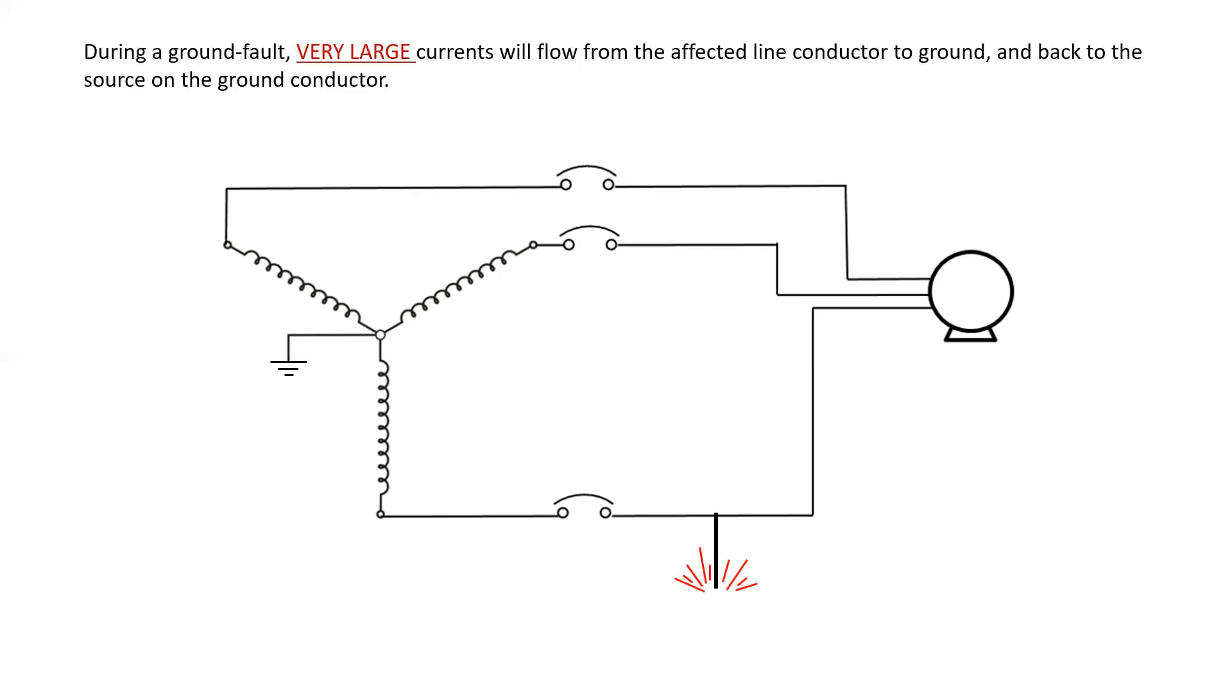During a ground fault, very large currents will flow from the affected line conductor to ground and back to the source on the ground conductor, and this will, of course, cause the offending circuit breaker to trip, thereby de-energizing the circuit.